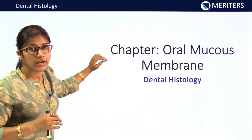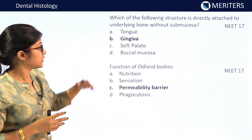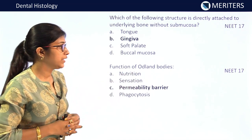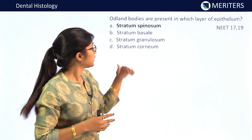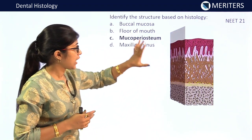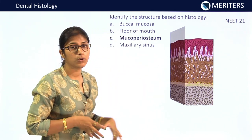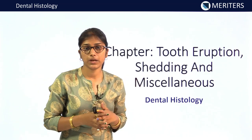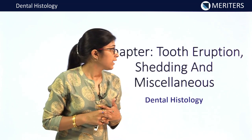For oral mucous membrane: which structure is directly attached to underlying bone without submucosa? Gingiva — NEET 2017. Function of Odland bodies is permeability barrier — NEET 2017. Odland bodies are present in the stratum spinosum layer of epithelium — asked twice in NEET 2017 and NEET 2019. An IBQ was also asked from this chapter — the muco-periosteum histology was shown — appeared in recent NEET 2021.